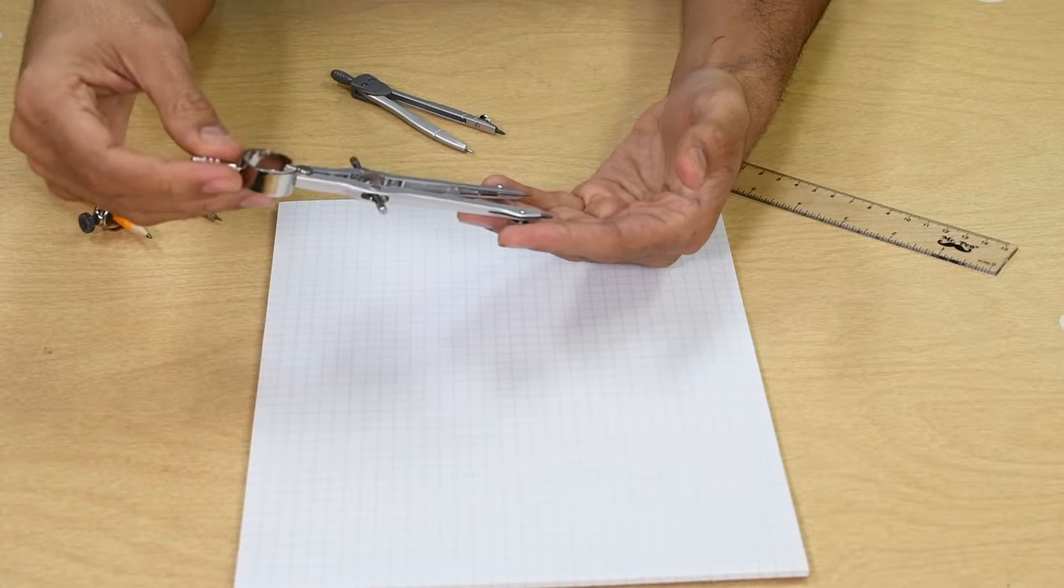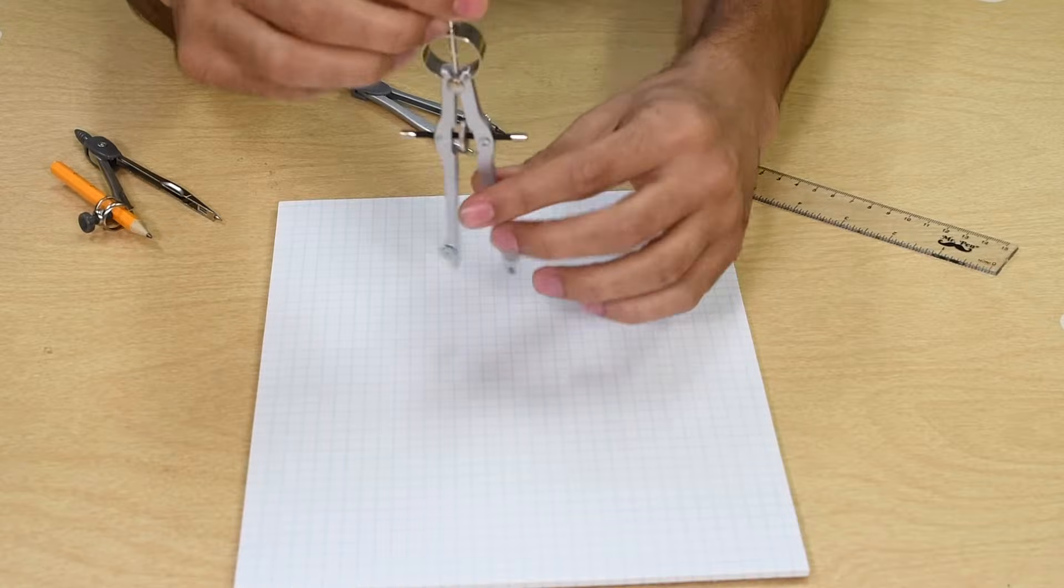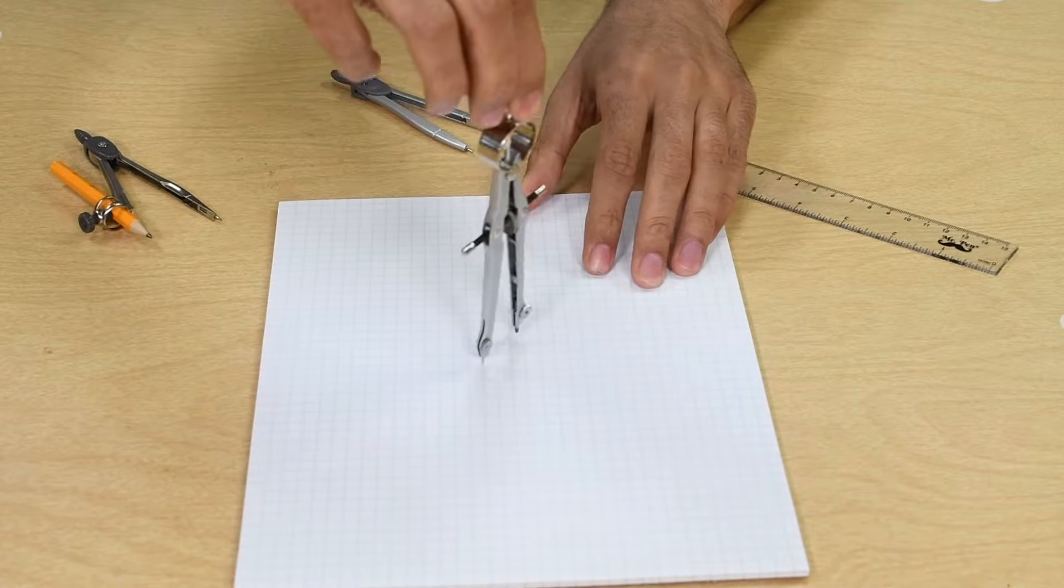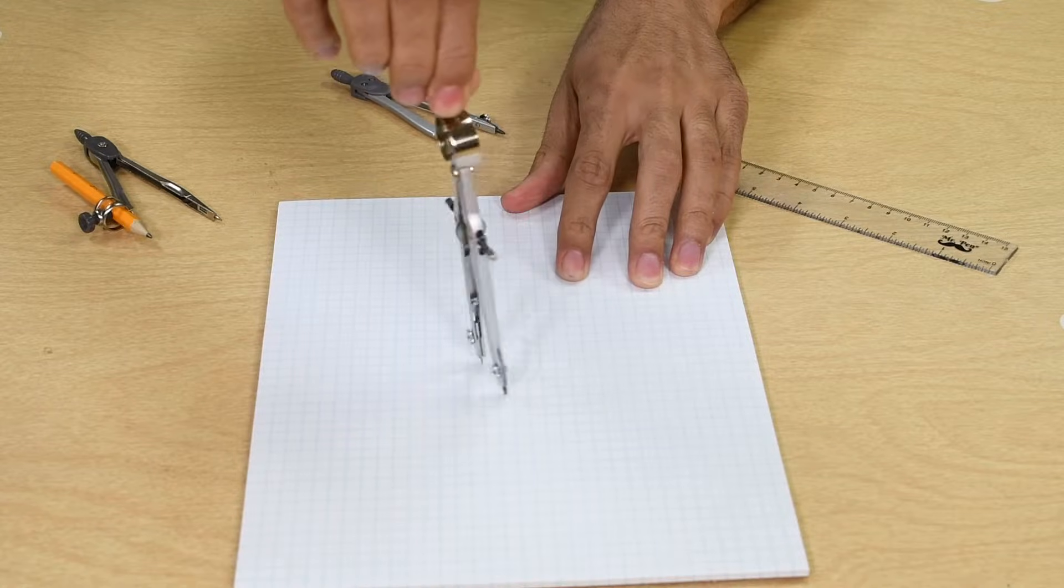Now we hold the compass at the top, not from the legs, and place the tip of the needle on the center of where you want to draw your circle. Rotate the top while pushing the leg down to draw the circle.